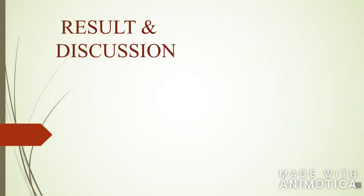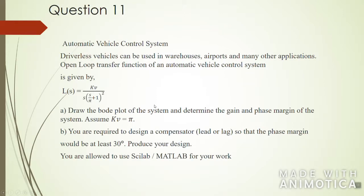Hello, my name is Ahmad Fatih, I'm going to examine results and discussion. We have question number 11: driverless vehicles. The open loop transfer function of automatic vehicle control system is given by L(s) equals Kv over s multiplied with (s over π plus 1) to the power of square. In order for us to solve this equation, we have two requirements.